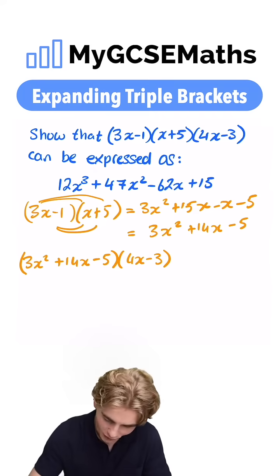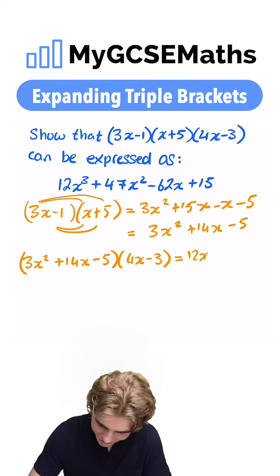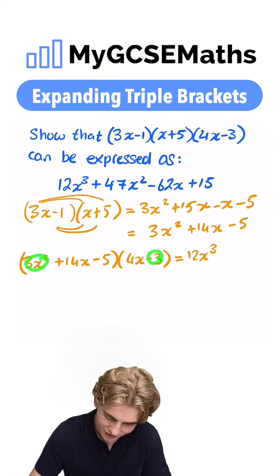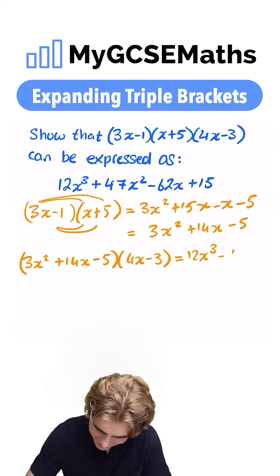3x squared times by 4x, that's going to be 12x cubed. Next up, 3x squared times by minus 3, that one is gonna be minus 9x squared.